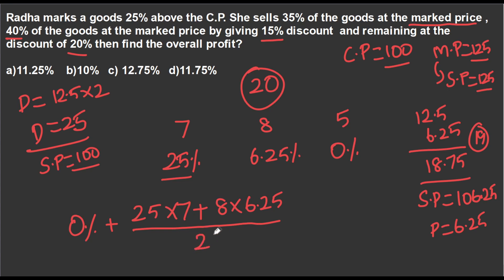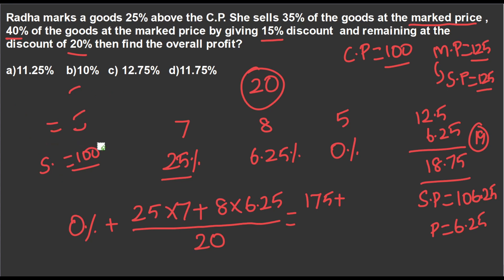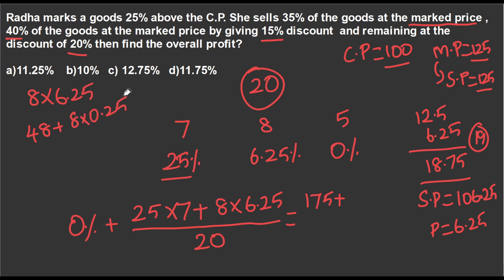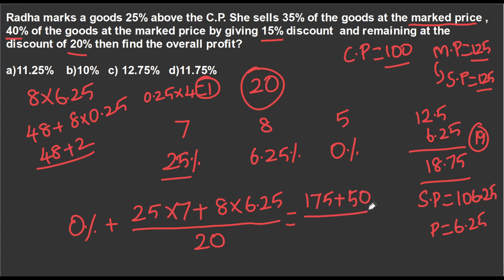We can split it with 20 members total. So 25% into 7 is 175. Plus 8 into 6.25: 8 into 6 is 48, and 8 into 0.25 is 2, so 8 into 6.25 is 50. So 175 plus 50 is 225, divided by 20.